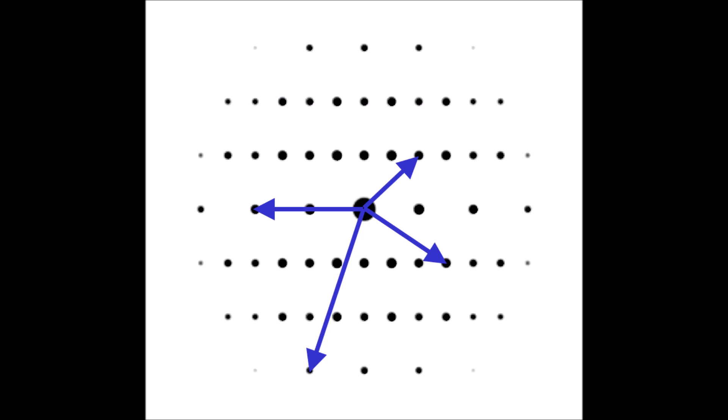And each of these G vectors is actually normal to the specific set of crystallographic planes that corresponds to each spot in the diffraction pattern.